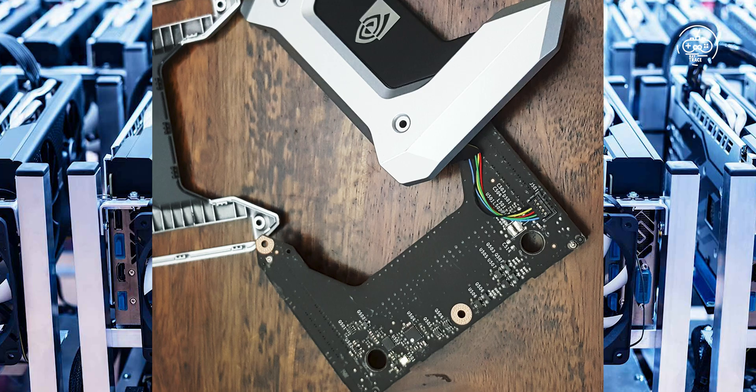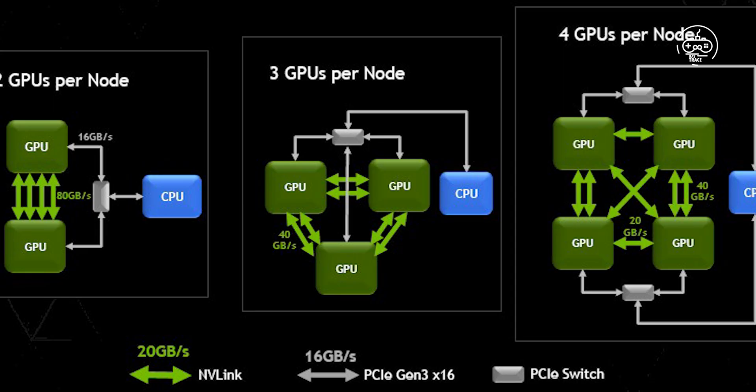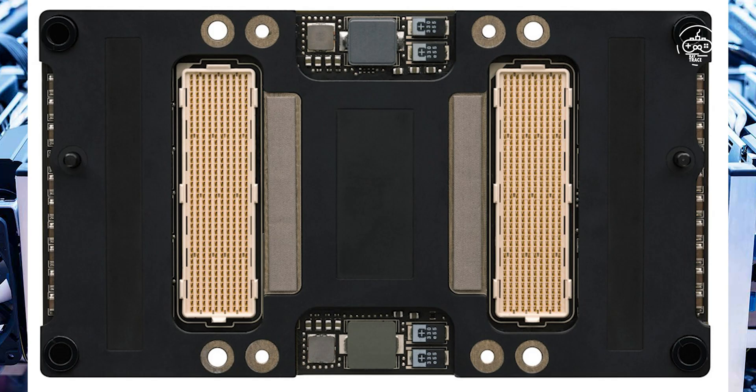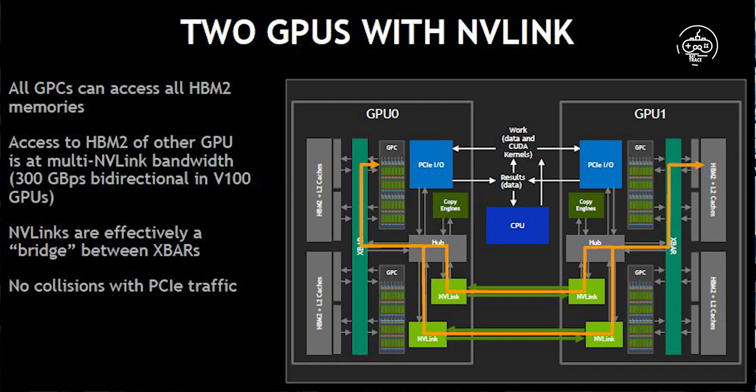Some rendering engines like Redshift employ out-of-core rendering to get around potentially low capacities of VRAM. In Redshift, when a graphics card runs out of memory, the render engine will allocate the system memory instead. While this comes at a performance cost, some scene data like textures will perform similarly when loaded from the system's RAM compared to loading from the GPU's VRAM.